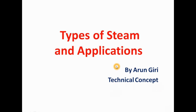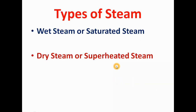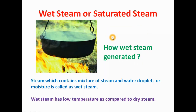Press the bell icon. Generally, steams are classified into two categories: first is wet steam and second is dry steam. Wet steam is also known as saturated steam, and dry steam is also known as superheated steam. Now we will see what is wet steam and saturated steam.